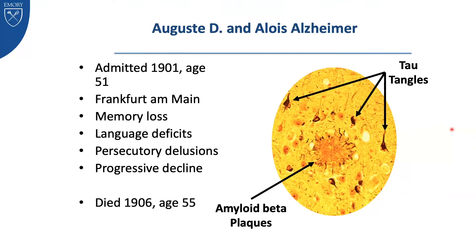These are the features that Alzheimer recognized — and that we still recognize today — as the key changes inside the brains of individuals with Alzheimer's disease. This center blob is called an amyloid plaque or senile plaque, made up of a protein called amyloid beta. And these dark triangular-looking things are abnormal proteins accumulated inside a brain cell — this is a brain cell with abnormal tau protein accumulated inside it. These plaques and tangles are found 100% of the time in anybody who has suffered and died because of Alzheimer's disease.